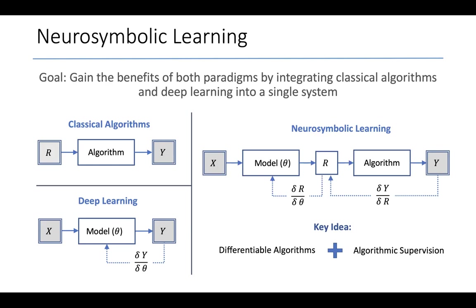What we have here is we can accept the same kinds of inputs that deep learning can accept. This can include raw data such as images, video, audio, or even tabular structured data. We first apply a neural model to it and obtain a symbolic representation R, which then is fed to a classical algorithm, which in turn produces the final result Y.